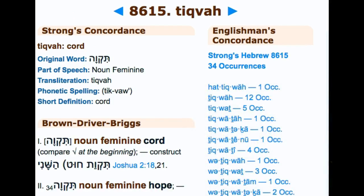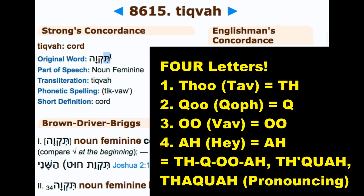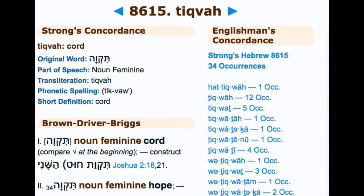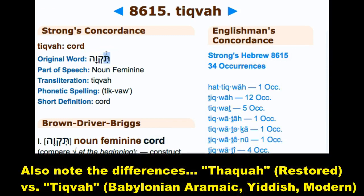Then there's a related word meaning chord or expectation — they call it Tikva, but it has the same Kuwa root with the Thu added in front. Four characters: Thu-Kop-U-Ah, giving Thukuwa. The only difference from the previous word is adding the TH in front, but you still get the Kuwa root from the original word.